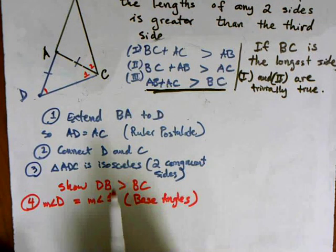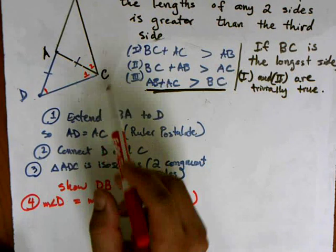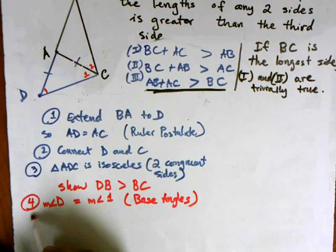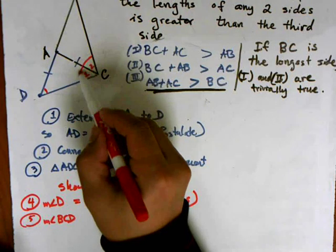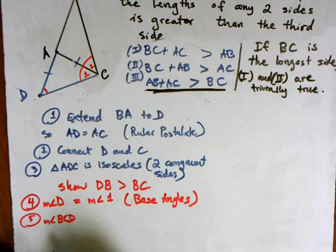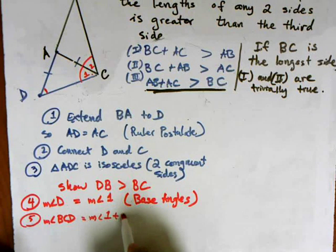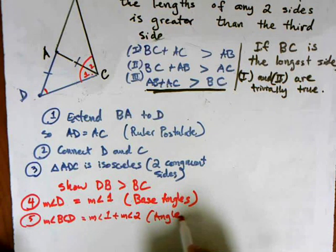Next I'm going to show that angle one plus angle two equals the measure of angle BCD. In other words, this big angle BCD equals angle one plus angle two. And this is by angle addition.